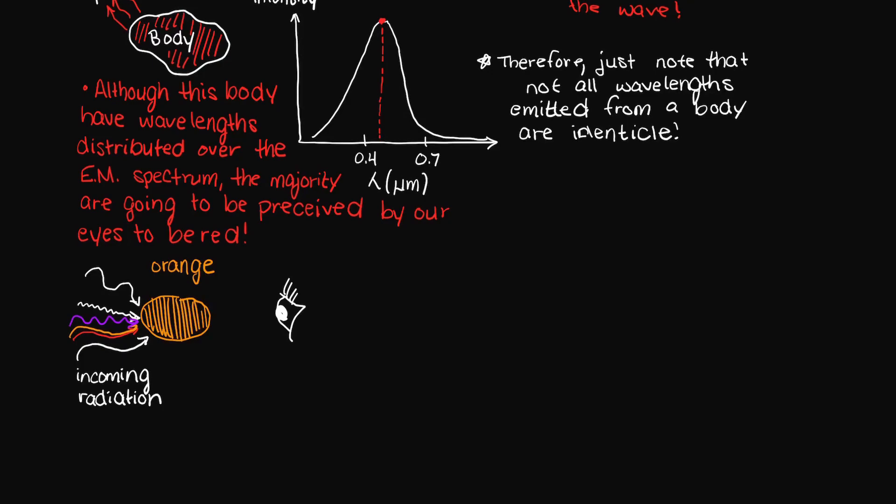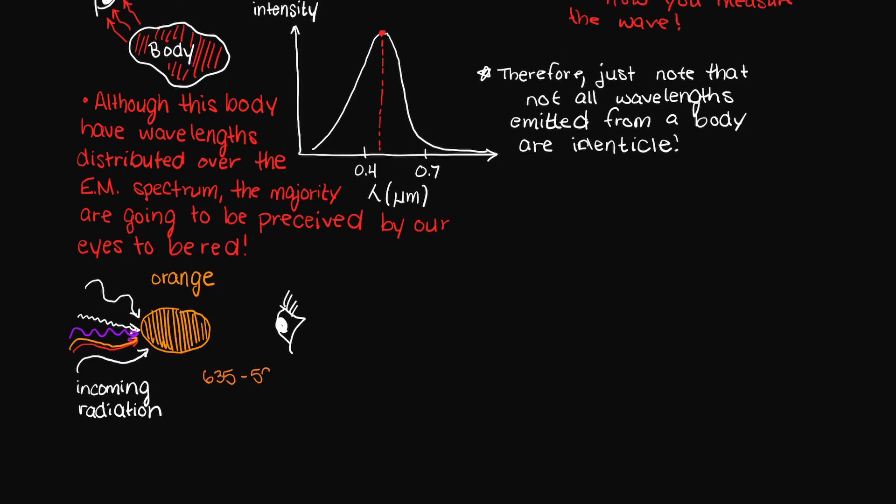However, due to its color, we know something about this orange. The orange is going to absorb all of the wavelengths of radiation that are not orange. Therefore, it will not absorb wavelengths around 635 to 590 nanometers. This is why orange is perceived by our eyes to be the color orange.